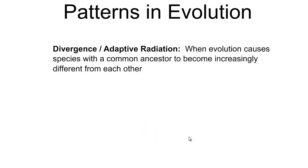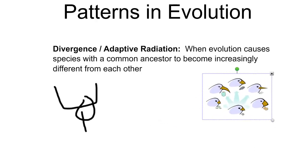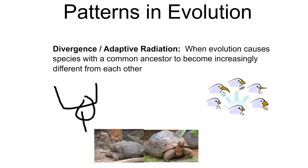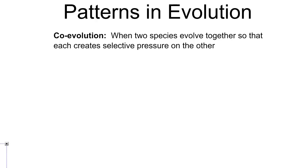The last topic we're going to cover today is patterns in evolution. So once evolution has occurred, scientists have identified three primary patterns in evolution as a whole, in the change in species. And the first and probably most common one is divergence. When evolution causes species with a common ancestor to become more different from each other. Some examples of that, the divergent evolution of the finches on the Galapagos Islands, or the divergent evolution of the different kinds of tortoises.